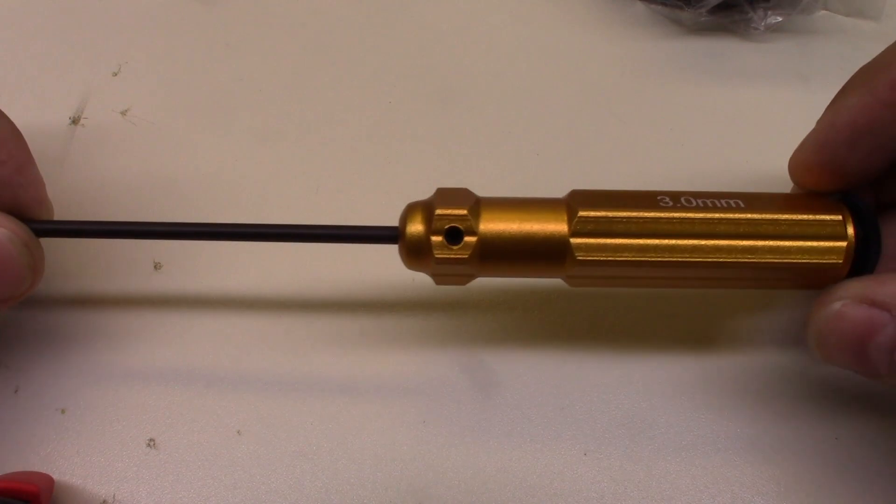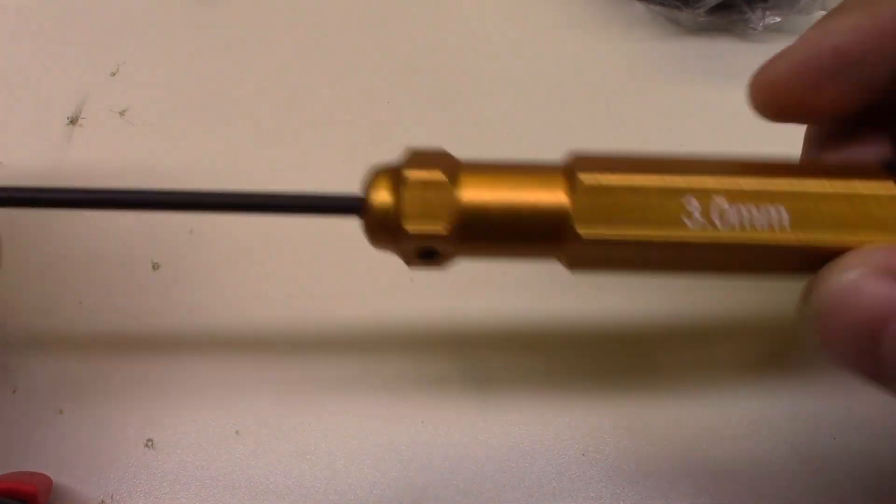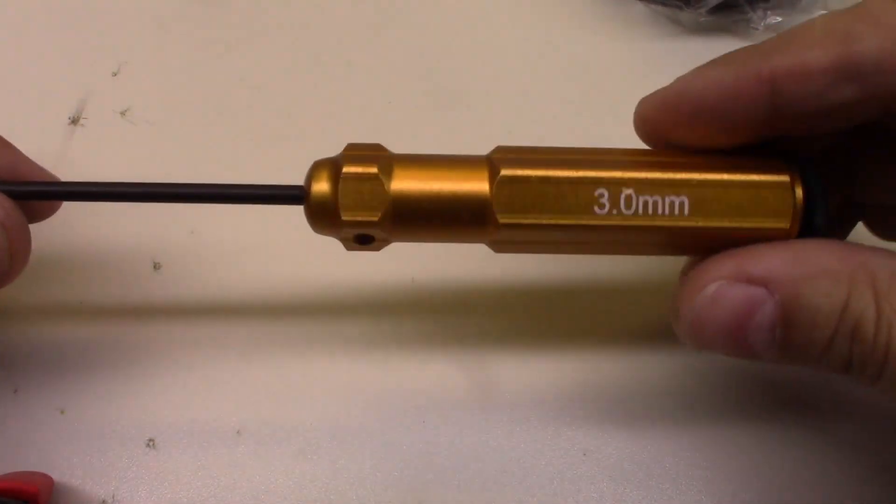Alright, so we're going to take a little bit closer look at the 3mm wrench. It's got the largest bit on the end, so it'll be easier to see close up.